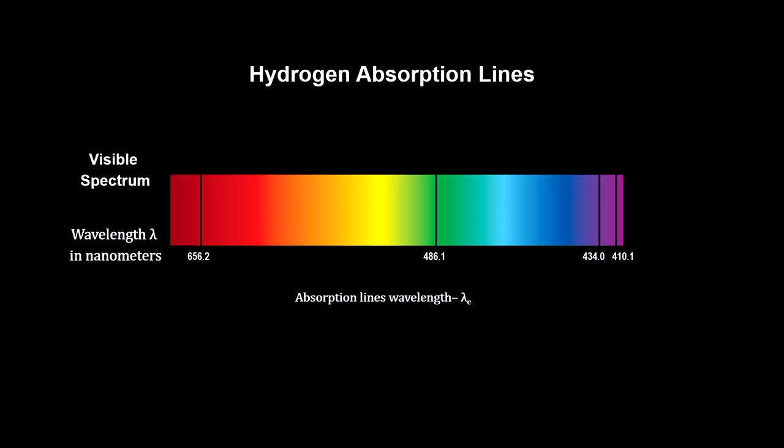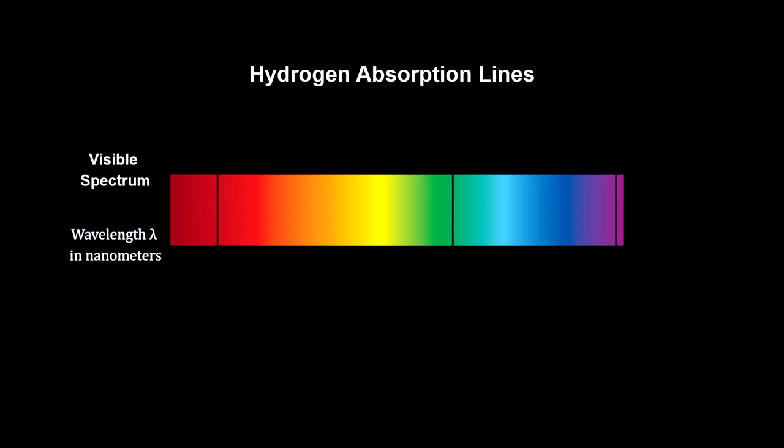Here's the pattern for a star at rest with respect to the observer. Light from an approaching star has its wavelengths shortened. We see that the lines shift to the blue. They are said to be blue shifted.